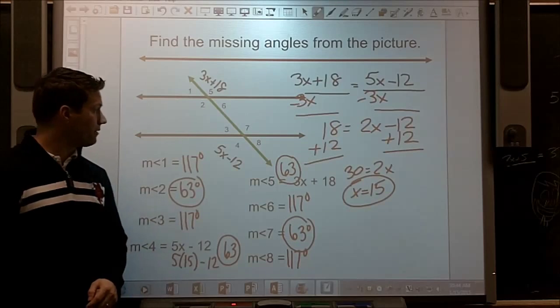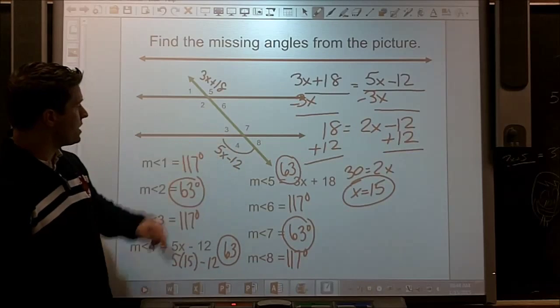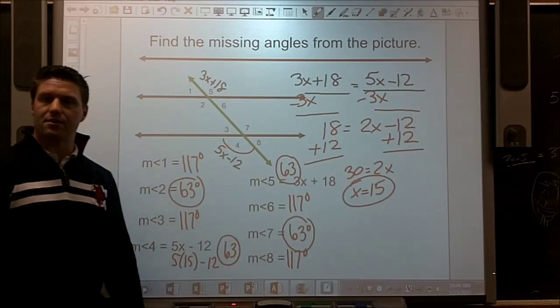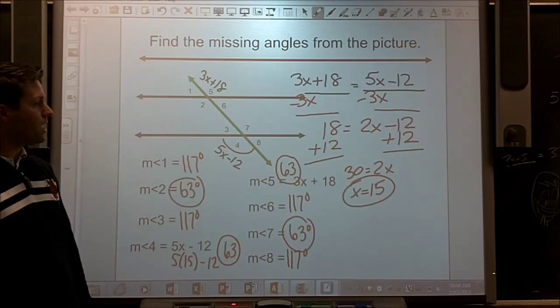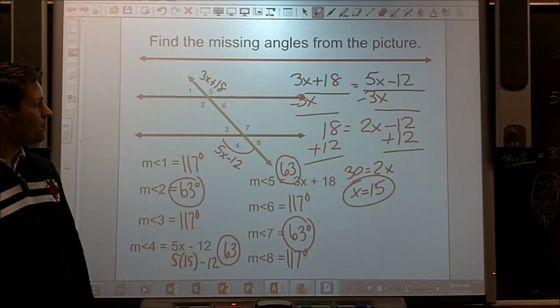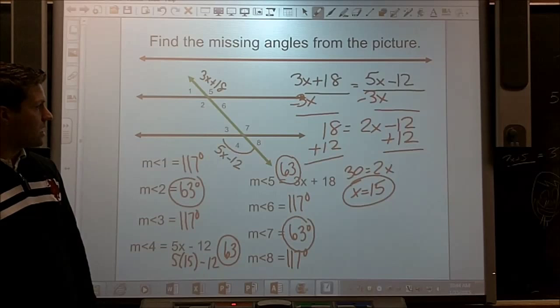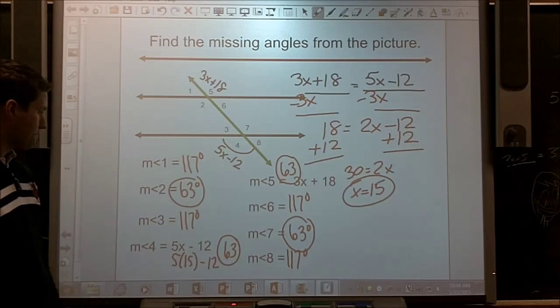Now, I know the picture doesn't look that way. This looks like it's an obtuse angle. Don't go by what the picture says. I think we did the algebra right. We got x is equal to 15, went back and solved, and that works for me.